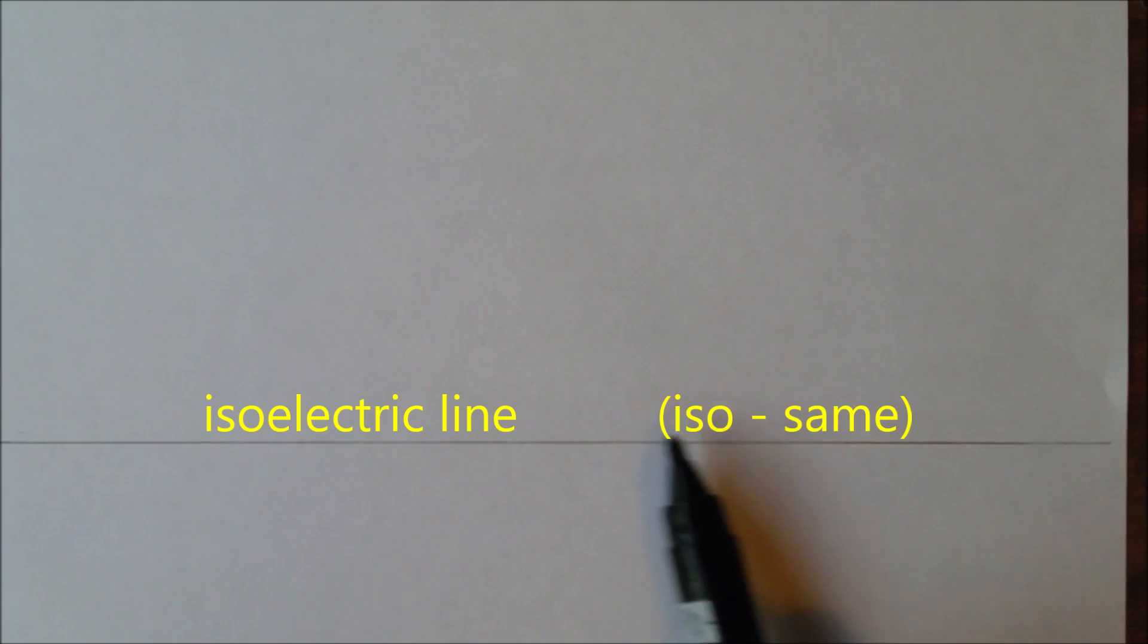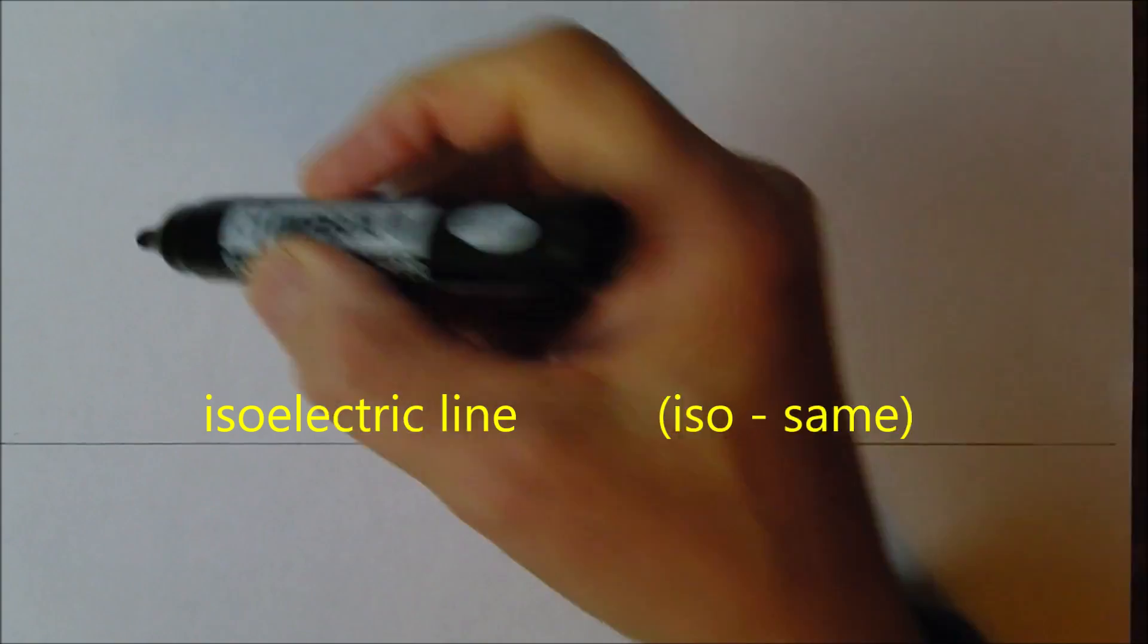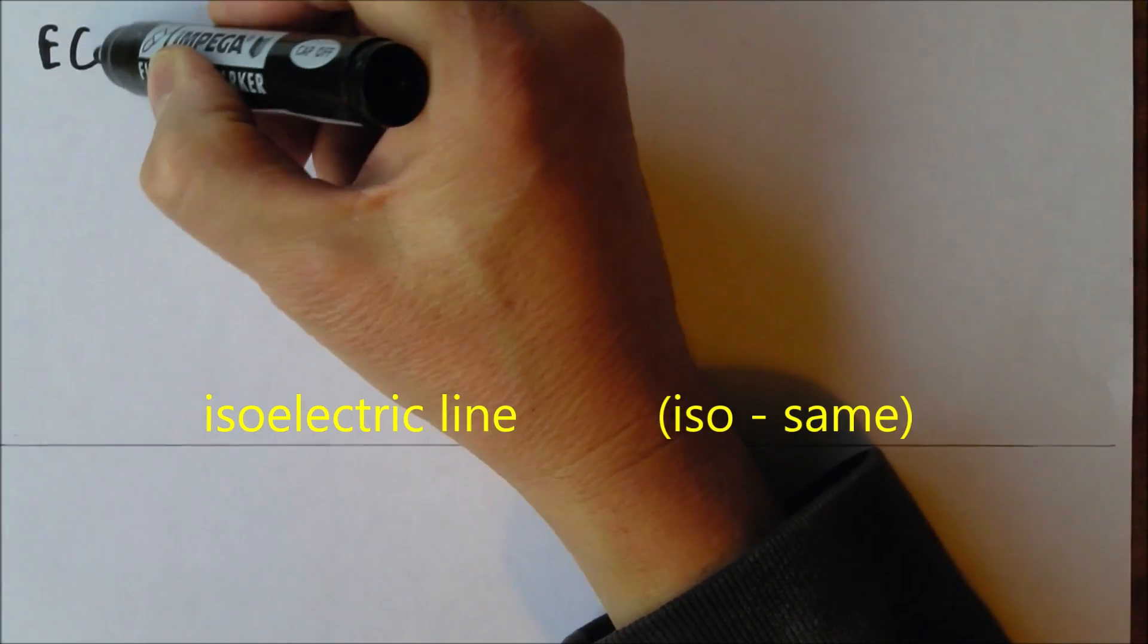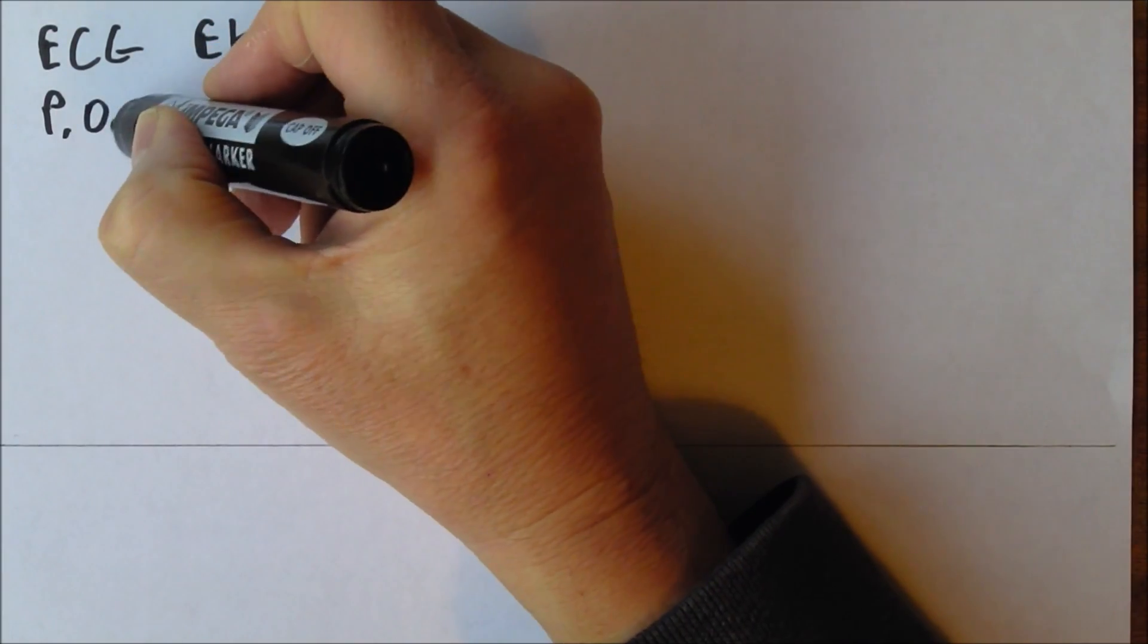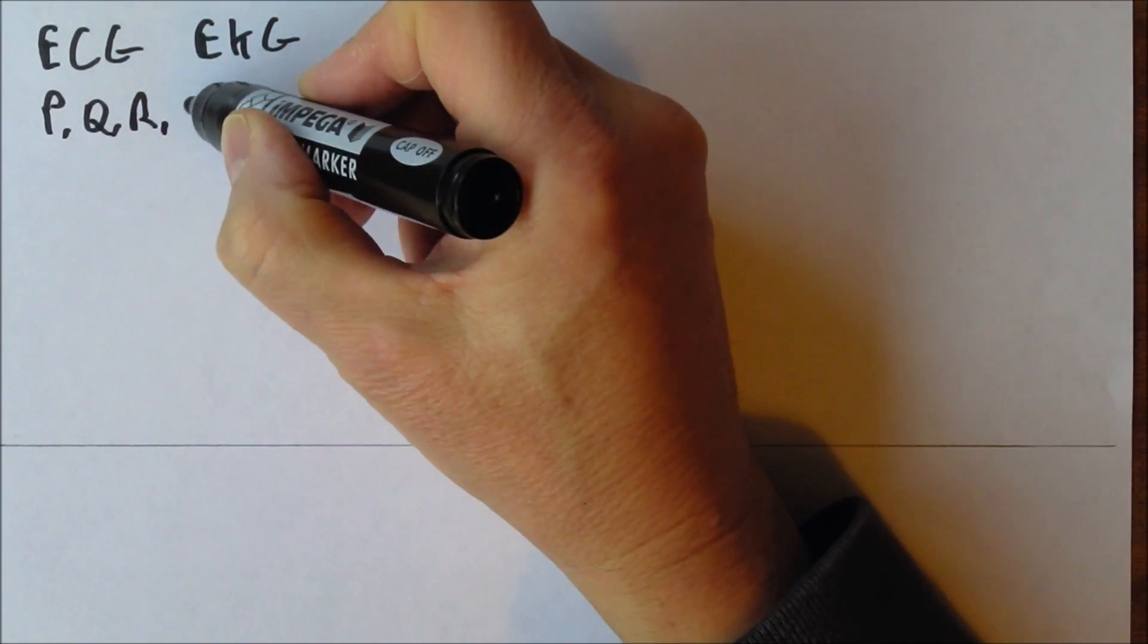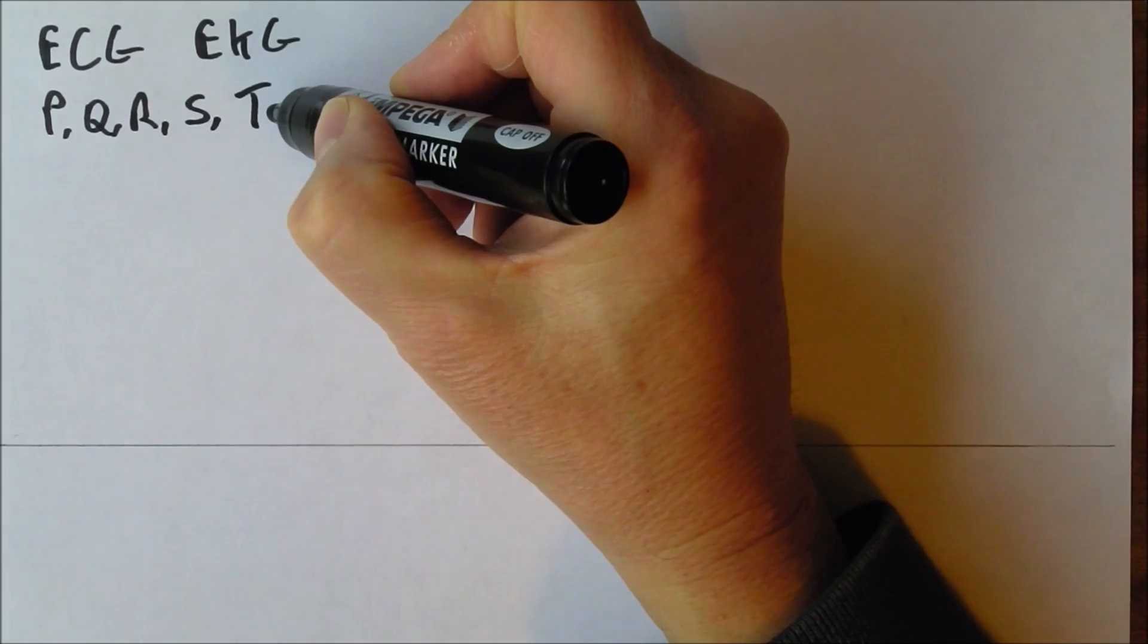Now let's think about the normal ECG trace again. What I've already drawn myself here is an isoelectric line and we want to use this to consider the ECG or EKG and we'll see it's got a P, Q, R, S and the T wave.